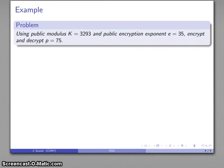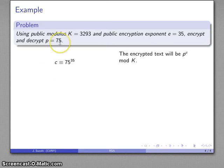Let's see how that works. The public modulus is 3293, the public encryption exponent is 35, and my message is going to be the number 75. I will find the encrypted text by taking the message 75, raising it to the public exponent 35, mod 3293. And after all the dust settles, that works out to be 852. So there's my encrypted text.